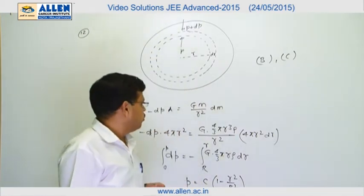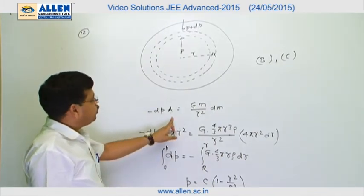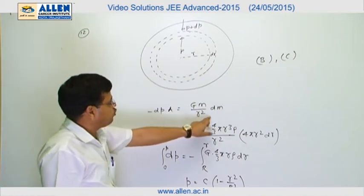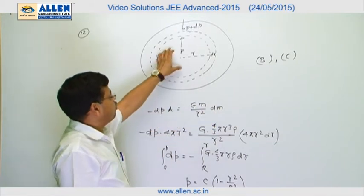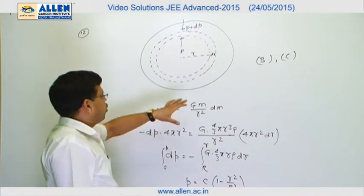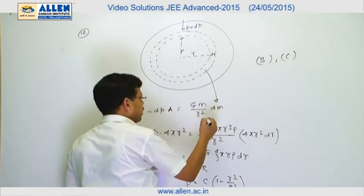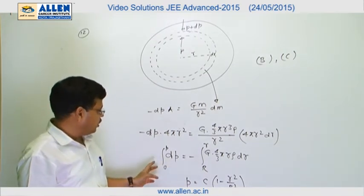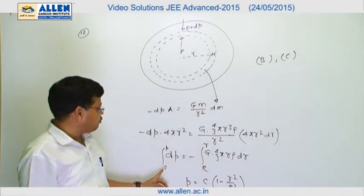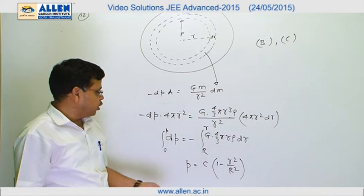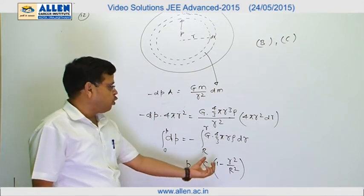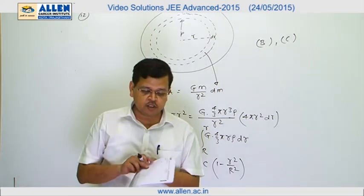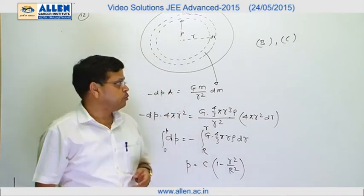Since this shell is under equilibrium, minus dP times A — where A is the area of the shell — equals G·M over r squared times dm, where M is the mass of liquid within the smaller sphere and dm is the mass within this shell. Putting in the values and integrating from 0 to P and from r to small r, P equals some constant times (1 minus r²/R²). Substituting the given values of r gives correct options B and C.